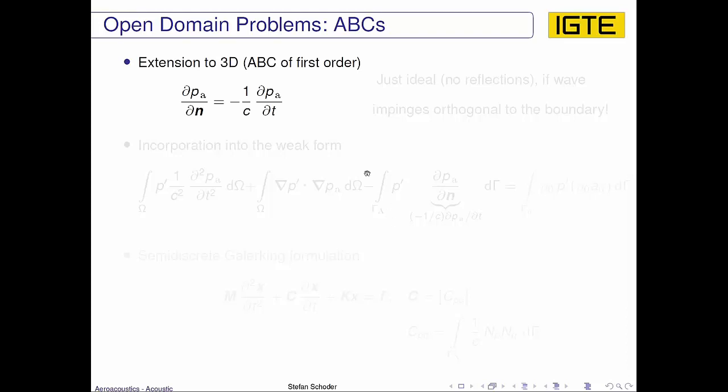Extending this ABC to 3D, we just replace the x by the derivative or the gradient in the normal direction of the boundary, which is modeled by this minus 1 over c times the time derivative of the acoustic pressure.